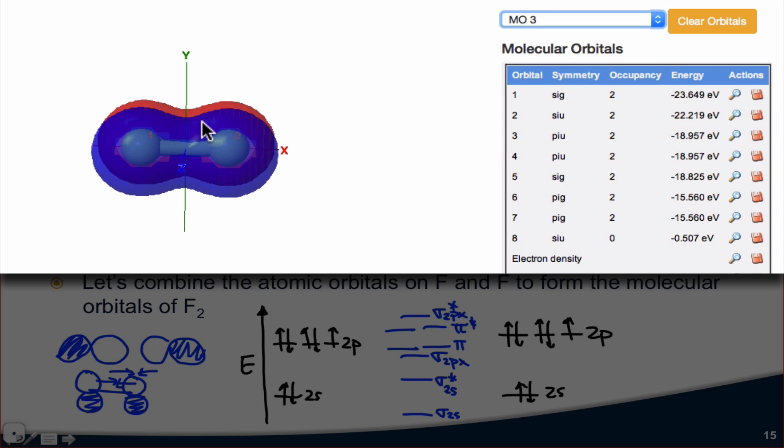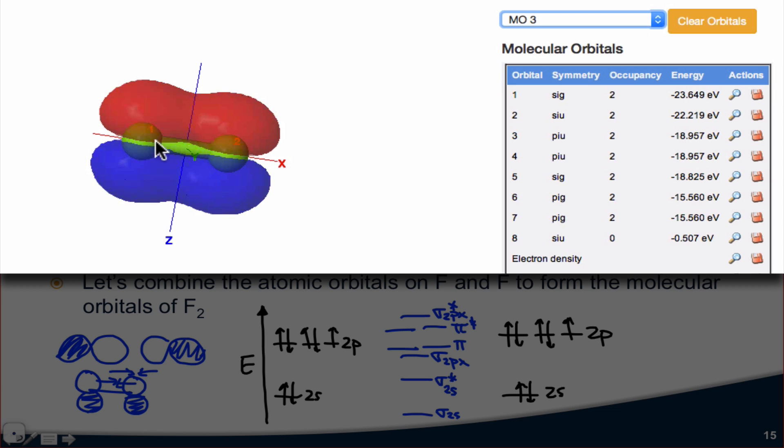MO3 is our first pi orbital. And notice that it's got this kind of sandwich shape with a lobe on top and a lobe on bottom of opposite sign. And if we really pay attention to how the red and the blue lobes are aligned, and if we imagine, for example, covering up one of the fluorines, we can see which p orbitals were involved in the construction of this molecular pi orbital. See if you can figure this out. Which axis are the p orbitals that combine to form this molecular orbital aligned along? Well, it's the z-axis. If we imagine the separated p orbitals, they'd be pz orbitals.